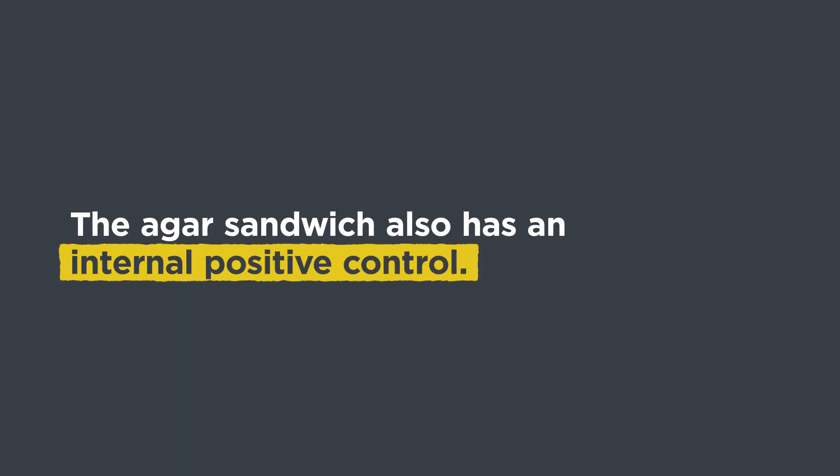Within my experiment with the agar sandwich, within every sample, you always have the root in contact with unaltered regular standard media, and that should induce root branching. So that's a type of positive control to show that the root is capable of producing branches at all.